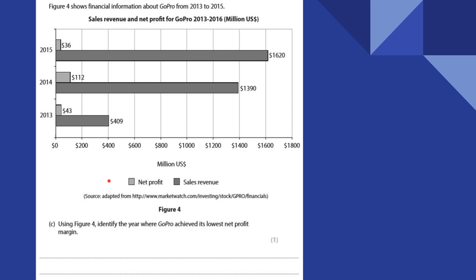Using figure four, identify the year where GoPro achieved its lowest net profit margin. We've got sales revenue and net profit. Their sales revenue was enormous in 2015, but the actual net profit was very, very low. So you can easily identify: 36 divided by 1,620 is going to be the smallest — that's 2015.